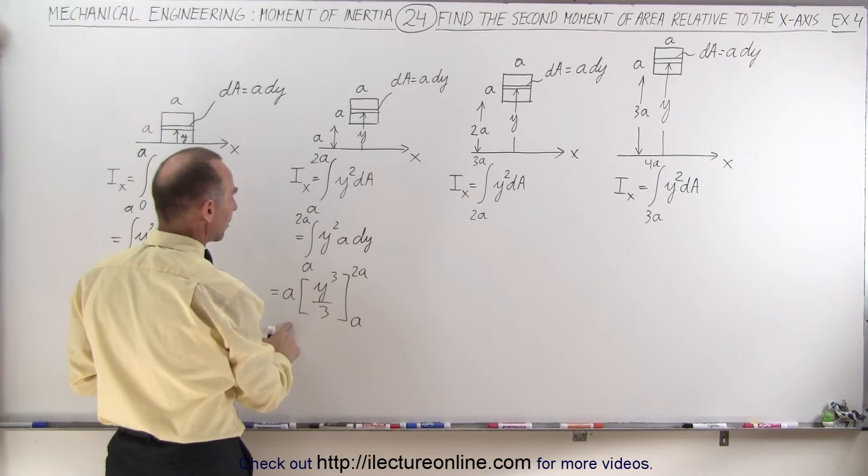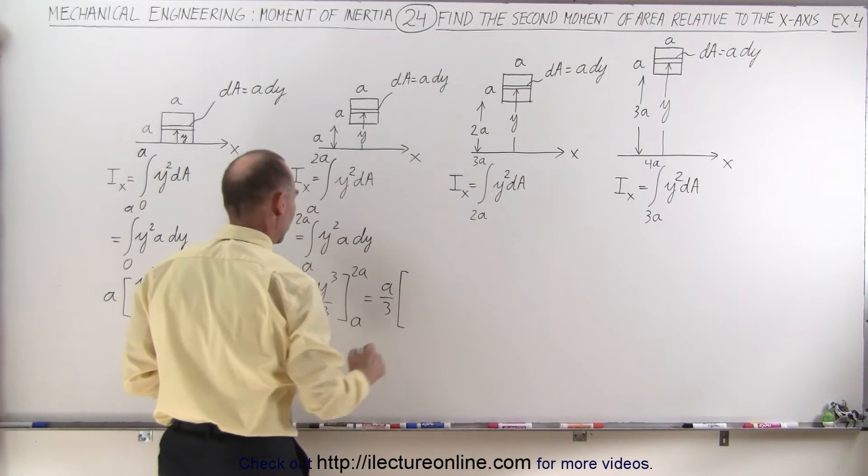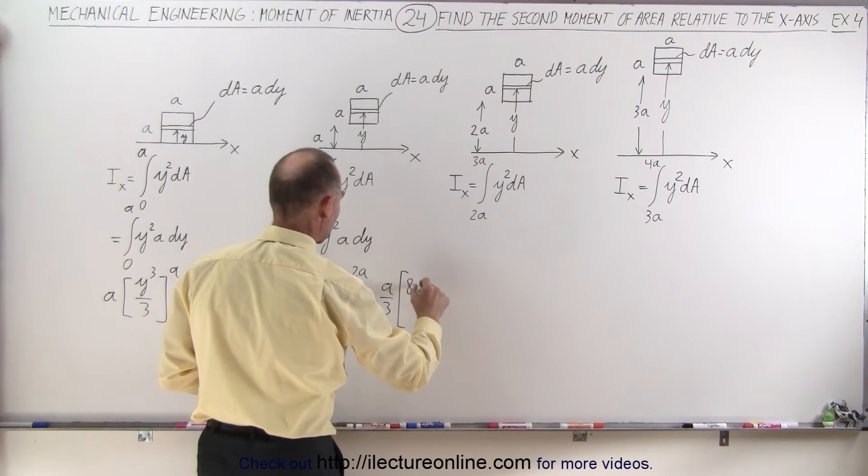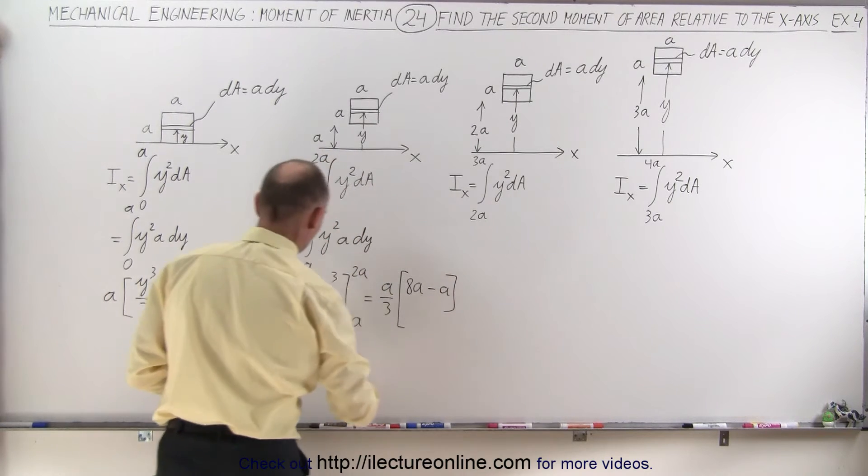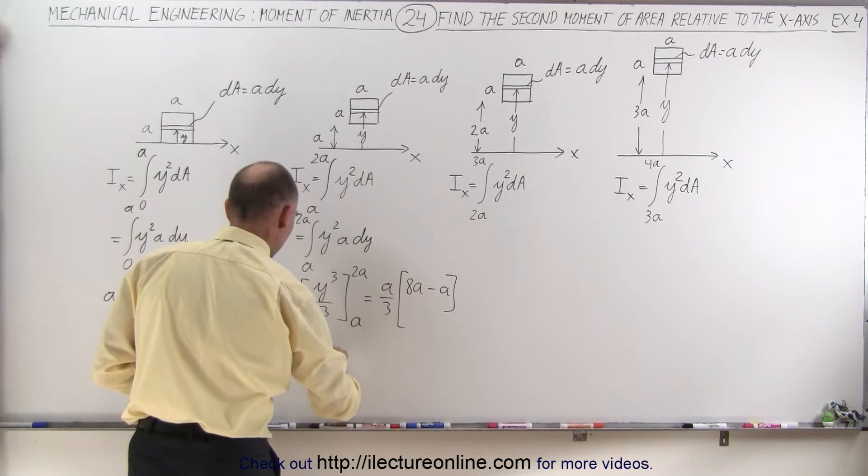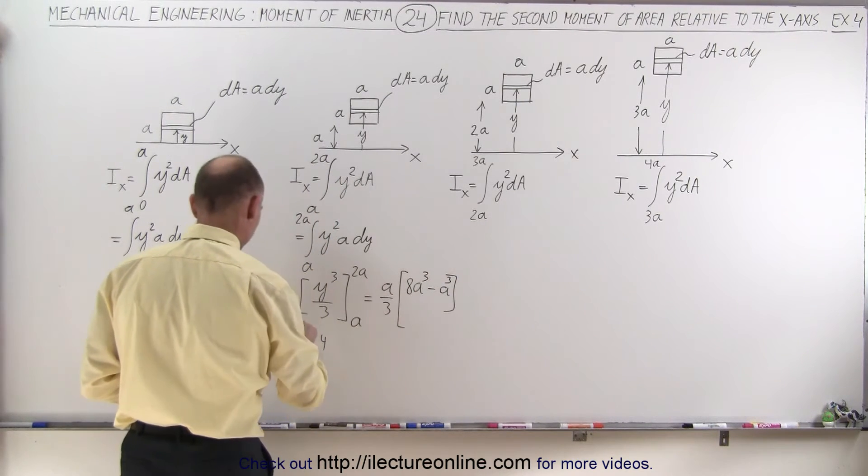The 1 third can come out, so this is equal to a over 3 times, when I plug in the upper limit, I get 8a cubed, minus when I plug in the lower limit, I get a cubed. And so this becomes equal to 7 thirds a to the fourth power.